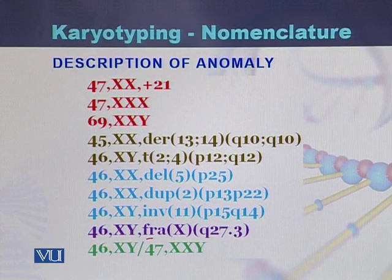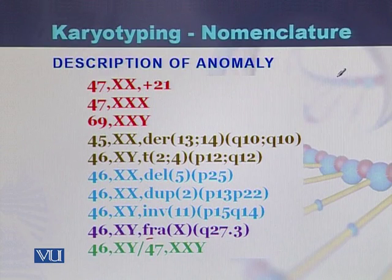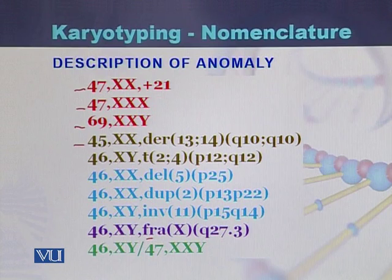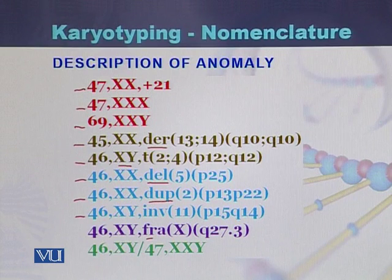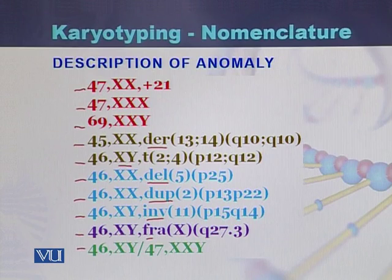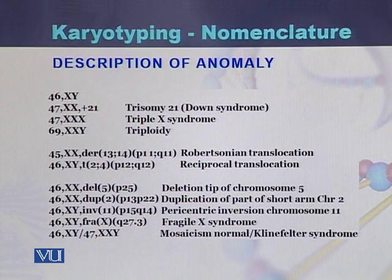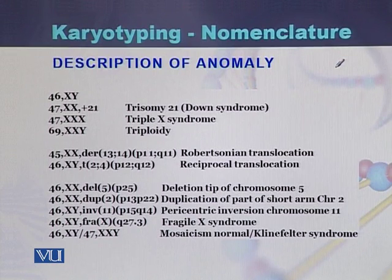We will now look at descriptions of anomalies found in males and females. Common examples include: 47,XX+21; 47,XXX; 69,XXY; 45,XXder; 46,XYt; 46,XXdel; 46,XXdup; 46,XYinv; 46,XYfra; and 46,XX/47,XXY. We will see one by one what these descriptions mean. As mentioned at the beginning, 46 is the number of chromosomes and XY represents the sex chromosomes of that individual.